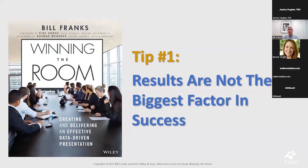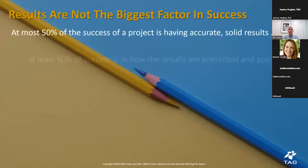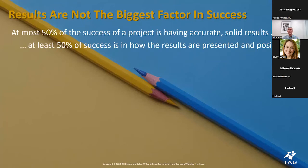There are 119 tips in the book; I'm going to pick a few. Tip number one: results are not the biggest factor in success. This is difficult to accept, especially for younger professionals. The reality is that at most 50% of your success in a presentation comes from accurate results that tell something important — at least 50% is how well you package, present, and position those findings to get someone to actually take action.